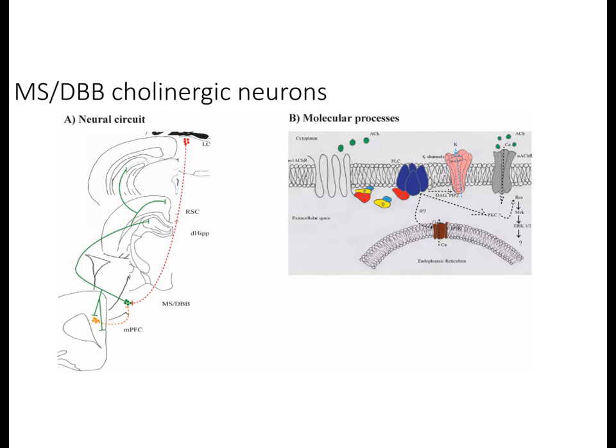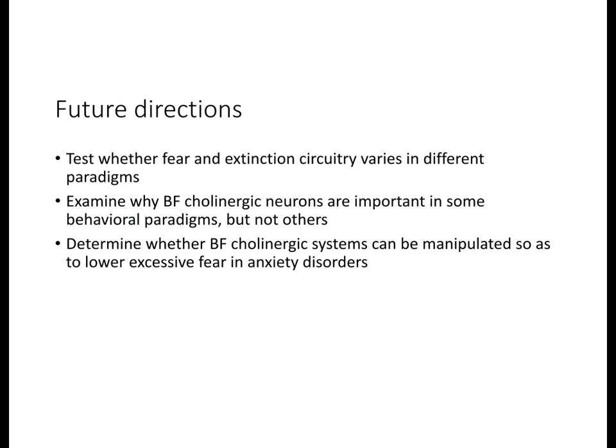We show hypothetical neural circuits in A, and molecular mechanisms in B. In summary, this review points to a number of novel hypotheses requiring testing — in particular, why basal forebrain cholinergic neurons appear critical for fear and possibly extinction memory in some paradigms but not others. We would also like to determine whether these cholinergic neurons can be manipulated to treat excessive fear and anxiety disorders.